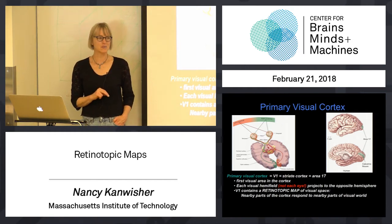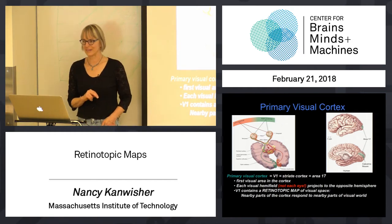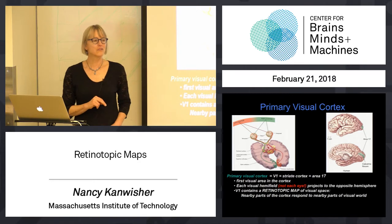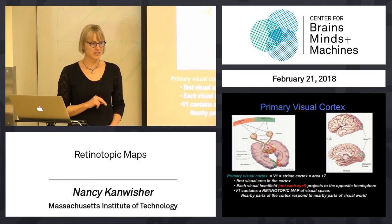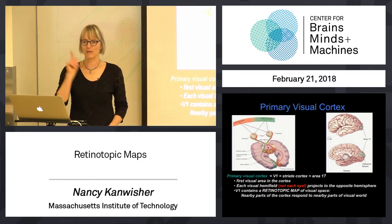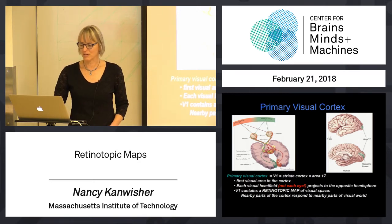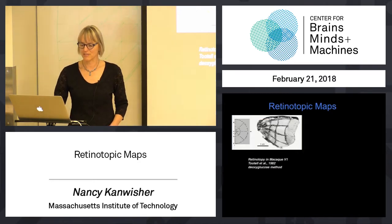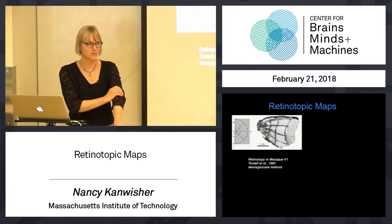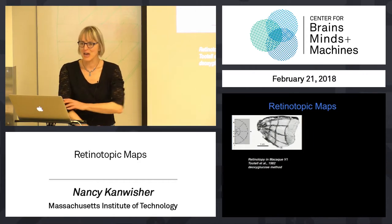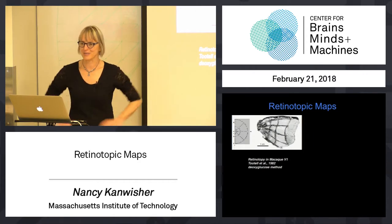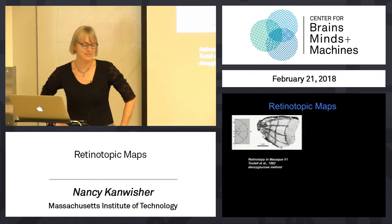Primary visual cortex has a bunch of cool properties, the most important of which is that it is retinotopic. Here is an extremely vivid — actually downright gross — depiction of retinotopy in primary visual cortex.